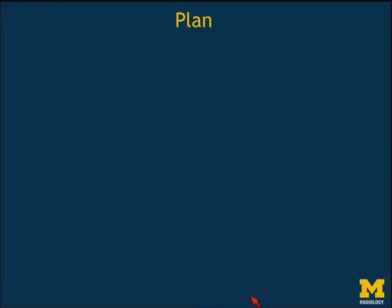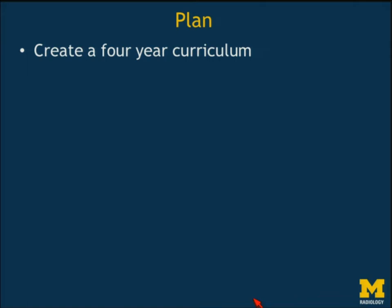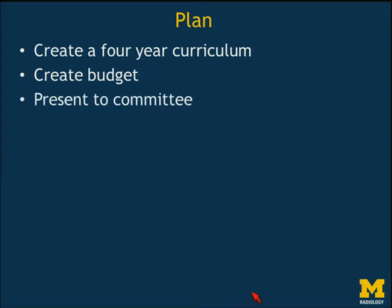I sat down and made a plan. I created a four-year curriculum. The idea was that if I had to leave this position tomorrow, someone could step into my shoes and have the plan already made — they wouldn't have to start from scratch or reinvent the wheel. We had to create a budget because a lot of this was going to take some money. I presented it to the committee and then assigned roles: I had a shadowing coordinator and a mentorship coordinator.